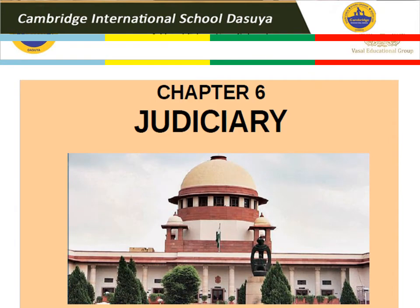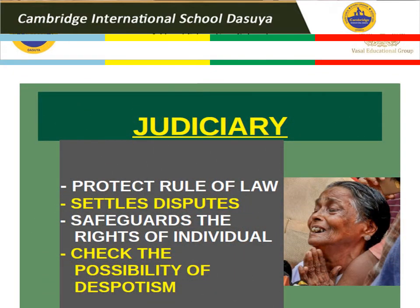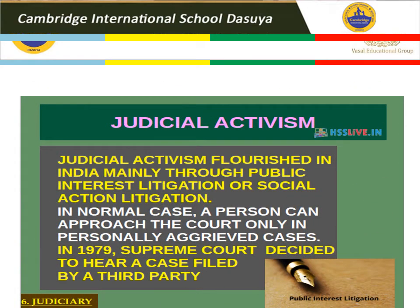Before going further, let me tell you what the Judiciary is. Judiciary means judges, High Courts, and the Supreme Court, along with advocates, working to give proper decisions for the country and maintain the dignity of each citizen. The Judiciary protects the rule of law — meaning equality of all before the law — settles all kinds of disputes, safeguards the rights of individuals, and checks the possibility of despotism.